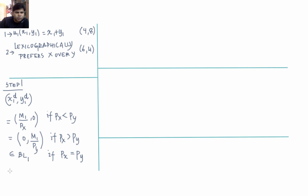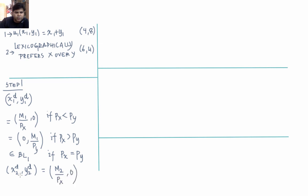What is the demand function of individual 2? Individual 2's demand as a function of px, py, and m2 is the following. Because he lexicographically prefers x over y, whenever prices and income are positive, he will always choose to spend all his money on commodity x. So his demand is (m2/px, 0) — he buys m2/px units of x and 0 units of y.